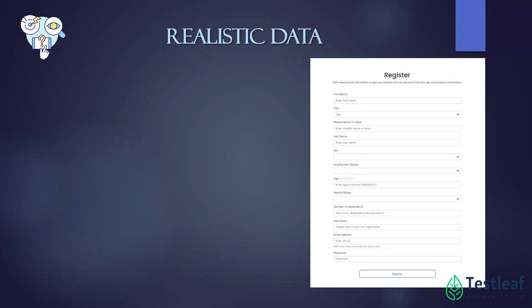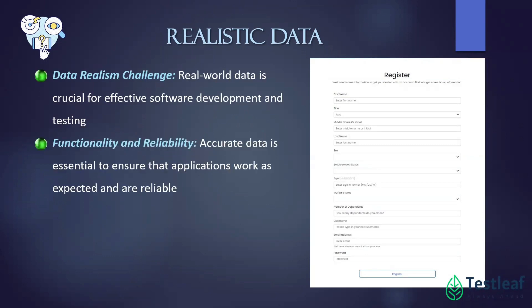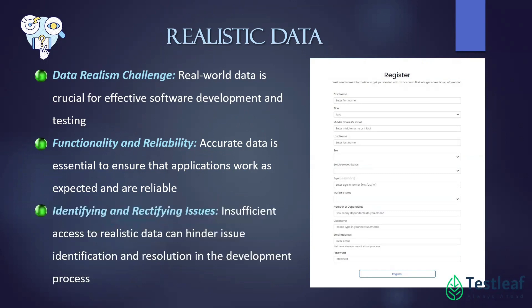The first pain point is realistic data - generating realistic data for our tests. You're testing a registration form and you need to fill in names, email addresses, and other useful information. Faker API can help with that. With Faker API, you can easily create lifelike data. Need a random name? Faker's got it. An email address? No problem. Addresses, phone numbers, dates, you name it. This realism in your test data makes your tests more robust and closer to real-world scenarios.